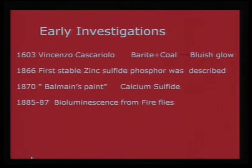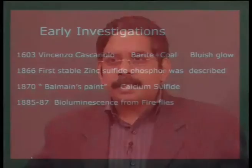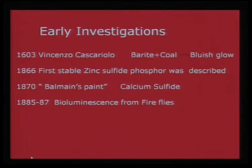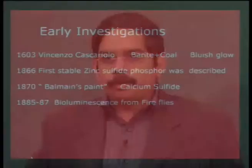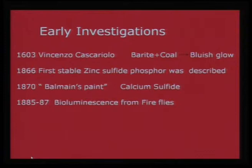Let me start with what the phosphor history is all about. It actually started as early as 1603 — an Italian scientist, an alchemist, found that barite, which is nothing but barium sulphate, when heated with coal produced a bluish glow due to barium sulphide formation. Since then there have been several revisitations of glowing materials: the first stable zinc sulphide phosphor was described in 1866, calcium sulphide was discovered in 1870, and by 1885–87 the concept of bioluminescence from fireflies was also observed.